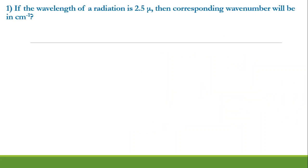Let us see the first question. In the first question it is provided that the wavelength is represented as lambda. Here it says that lambda is 2.5 mu. You have to find out the wave number. Wave number is represented as nu and we have to find out what is nu of this particular radiation, and the unit is centimeter inverse.